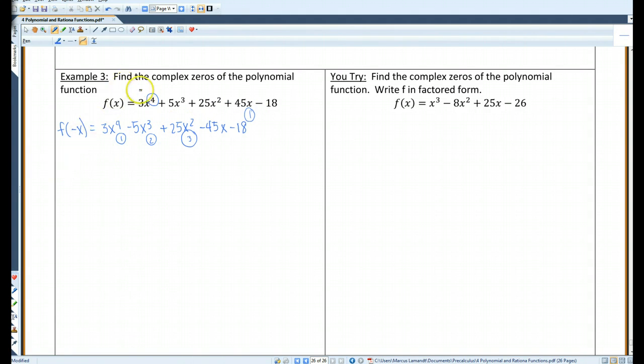Now, the rational zeros theorem, we're going to be looking at this number and this number. P, the factors of 18 are positive negative 1, positive negative 2, positive negative 3, positive negative 6, positive negative 9, and positive negative 18. And for 3, we've got positive negative 1, positive negative 3. So if I were to do all the combinations of p over q, this is what I get. Positive negative 1 third, positive negative 2 thirds, positive negative 1, positive negative 2, positive negative 3, positive negative 6, positive negative 9, and positive negative 18.